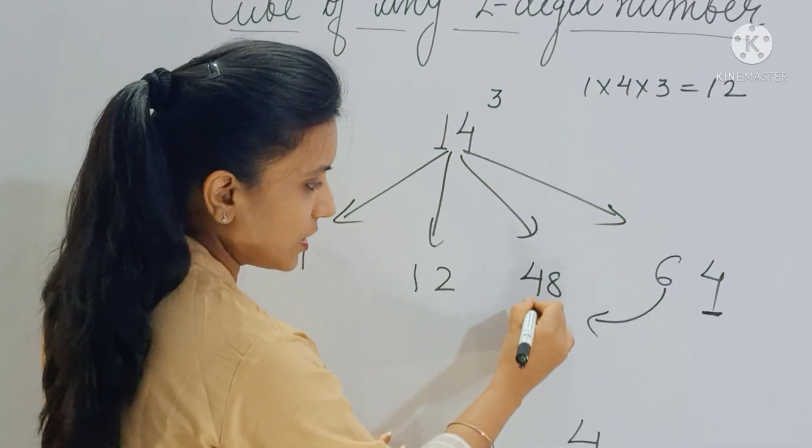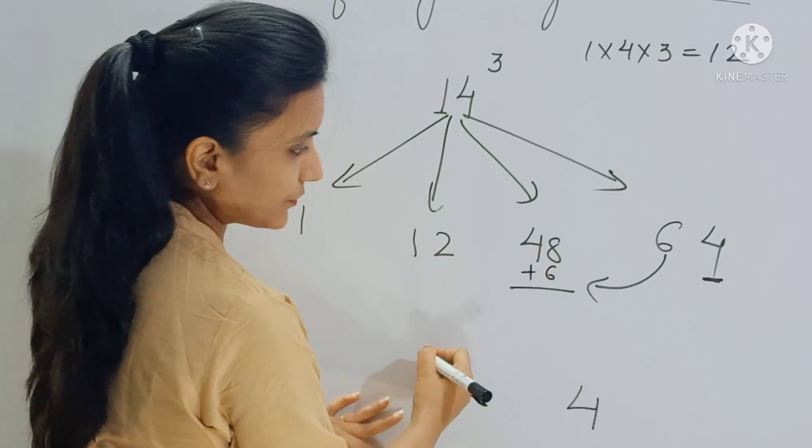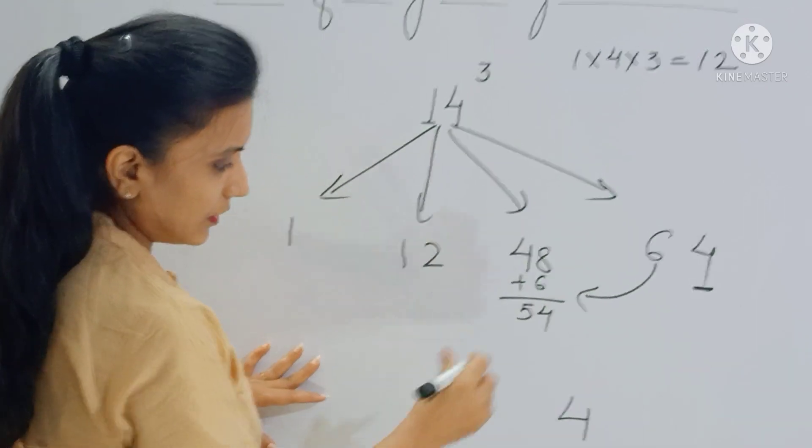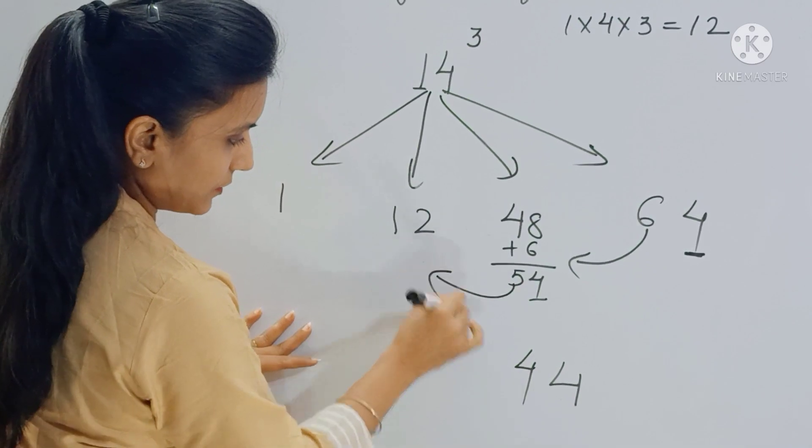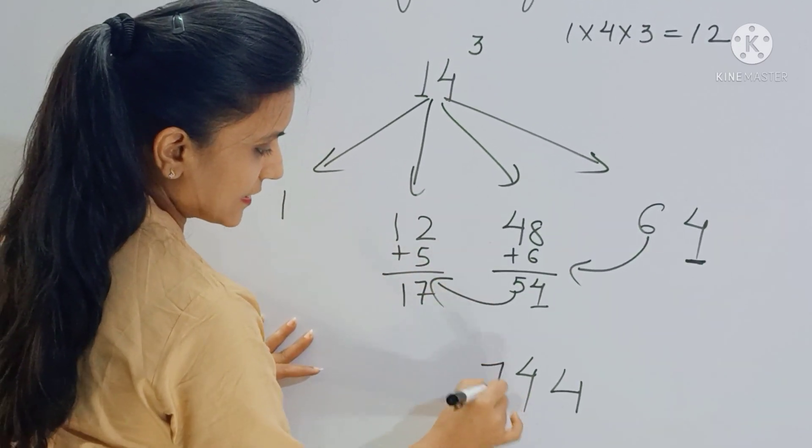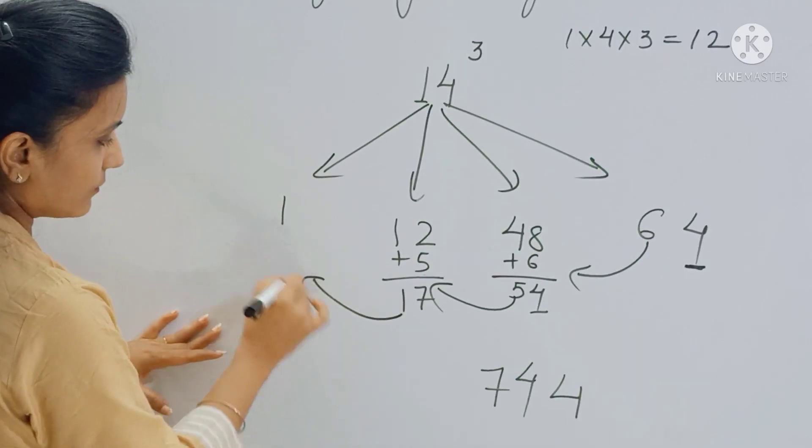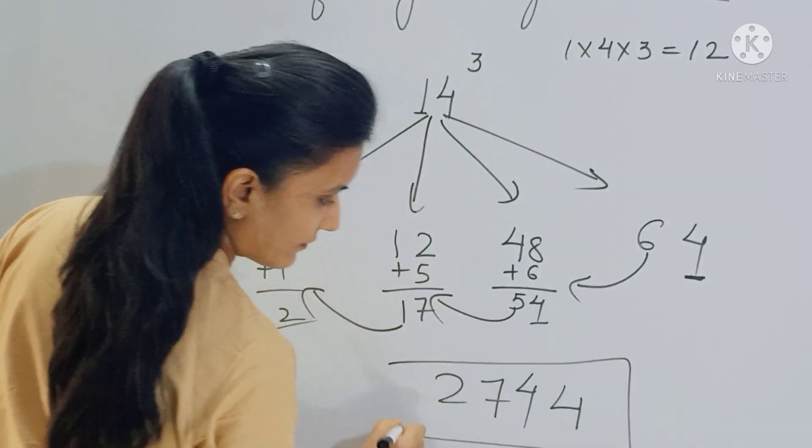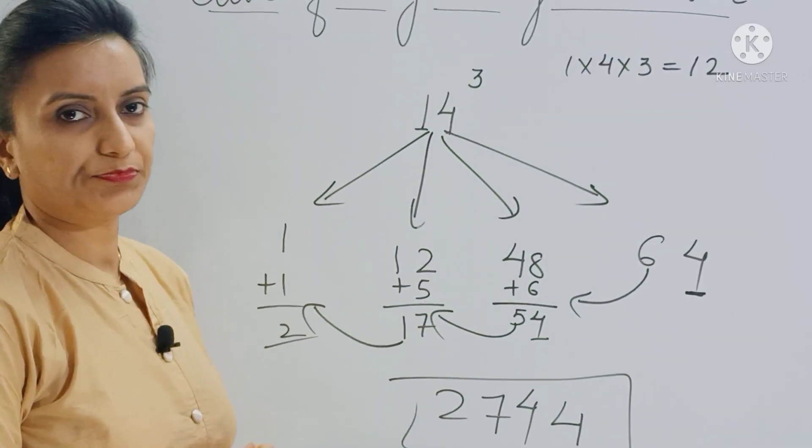Now again write 4 here, and 5 becomes the carry forward. So add 5 here, this becomes 17. So write 7 here, and this 1 gets added here, so you get 2. So 2744 is your answer. Let's do one more problem.